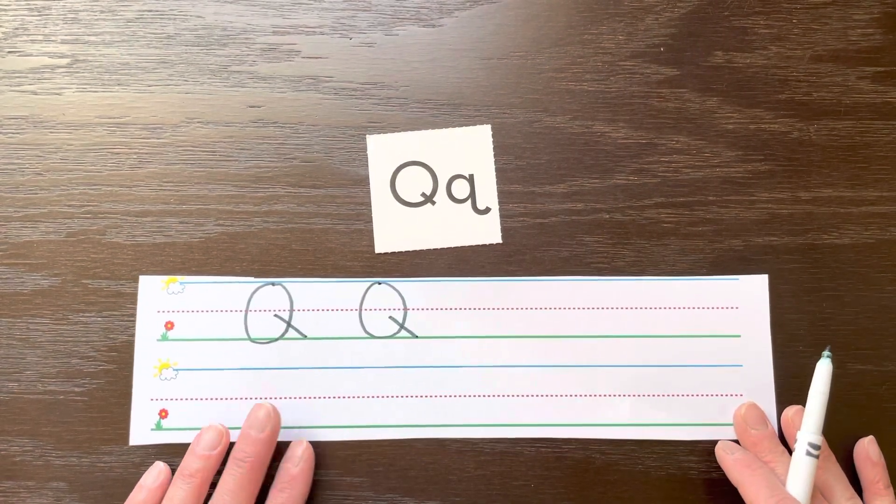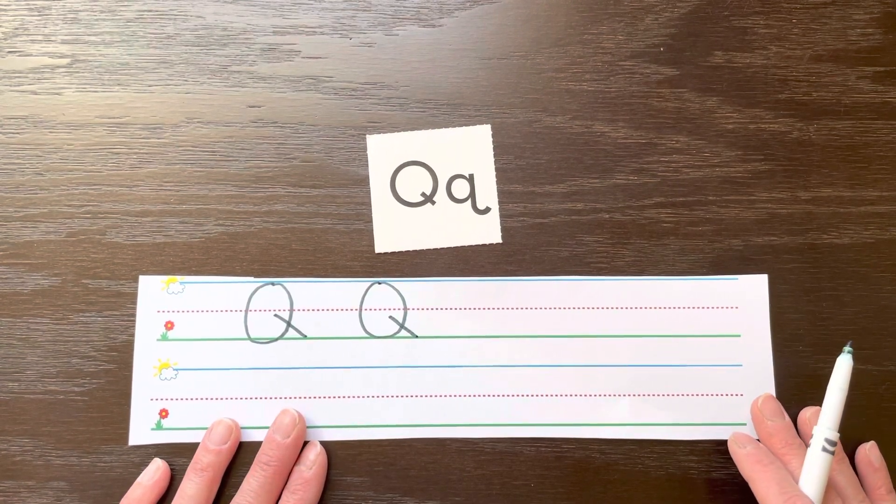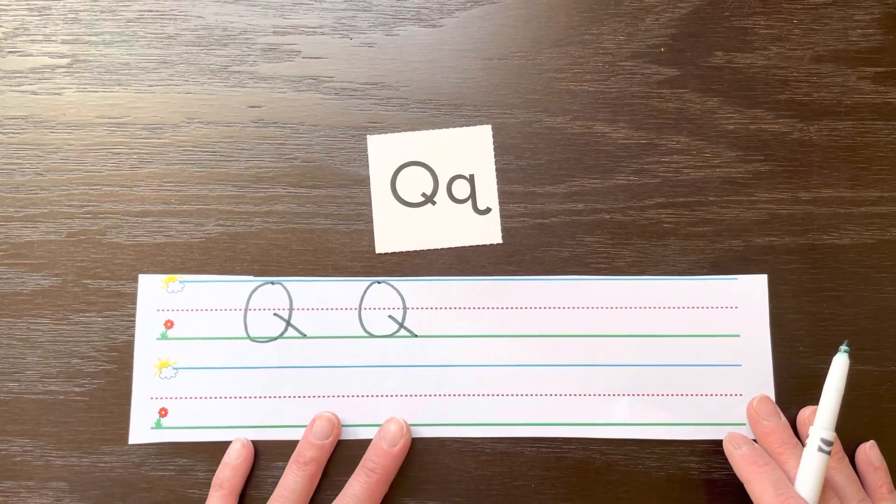Lowercase Q is a hole digger letter and it can get confused with the letter P, which is also a hole digger. For the letter Q, you start with a C shape.